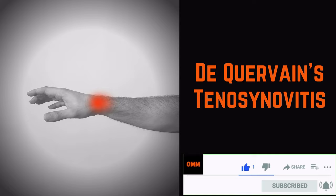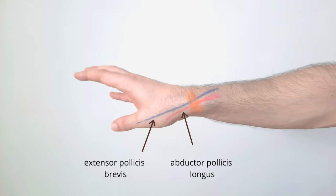These two tendons pass through a tunnel along the wrist and attach at the thumb. Secondary to repetitive movements or direct injury, the tendons and their sheath can get inflamed and painful.